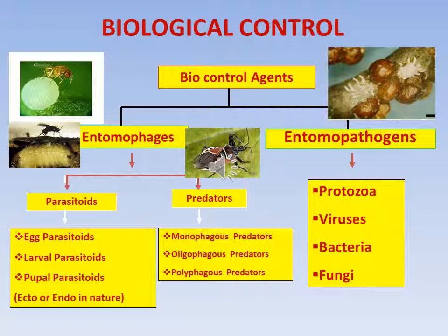Parasitoids kill the host based on the host stage at which they attack. They are classified into egg parasitoids, larval parasitoids, and pupal parasitoids. Based on whether they are on the body or inside the body of the host insect, they are called ectoparasitoids or endoparasitoids. Predators, based on their feeding habits, are classified into monophagous, oligophagous, and polyphagous predators.